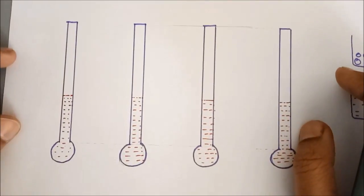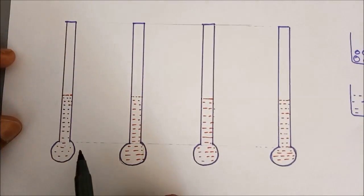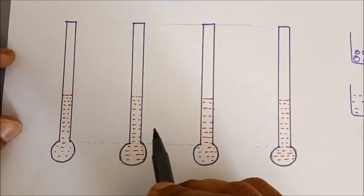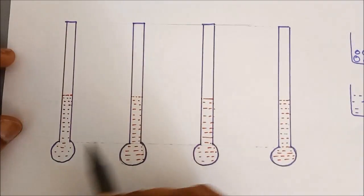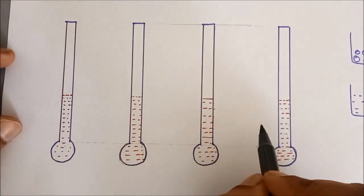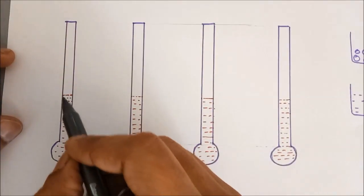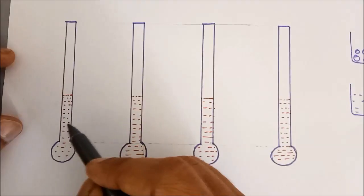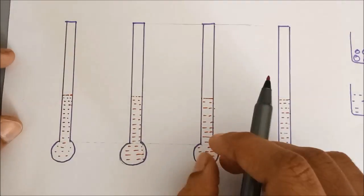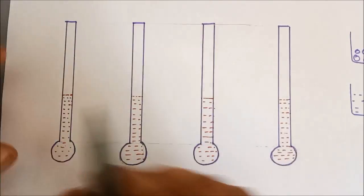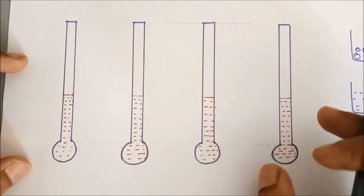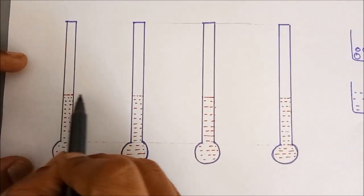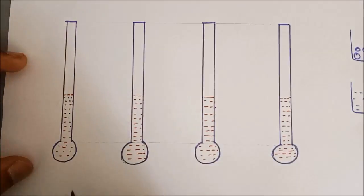Shown here in the diagram, there are 4 equal glass tubes — glass containers of equal size, equal volume — everything is identical, and we have filled these with mercury inside. The amount of mercury is kept the same in all 4 containers. Since all 4 are identical, the amount of mercury inside them is also the same and up to the same height, as can be seen from the diagram.